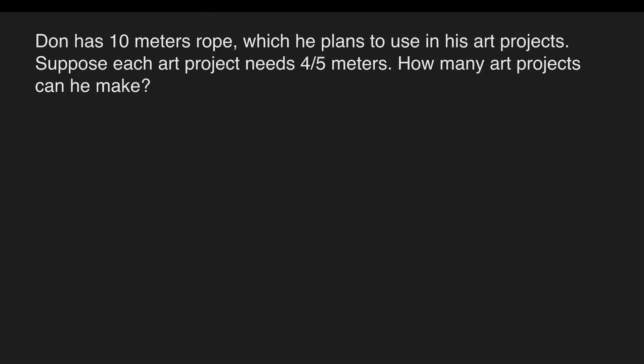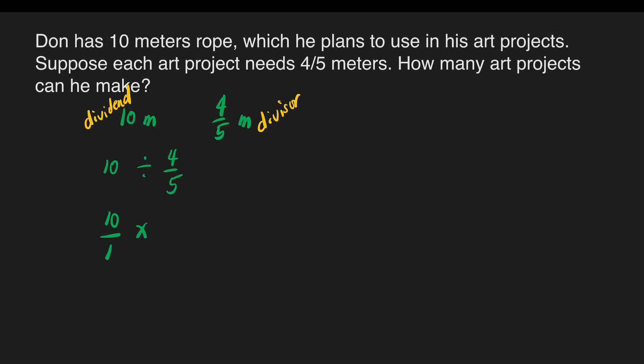Another example: Don has 10 meters of ribbon which he plans to use in his art projects. Suppose each project needs 4/5 meters. How many art projects can he make? Our given: 10 meters and 4/5 meters. Our dividend is 10 meters and our divisor is 4/5 meters.